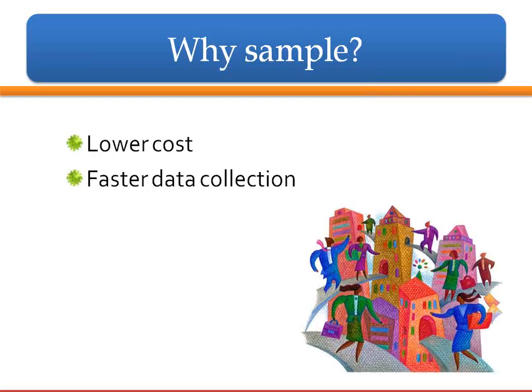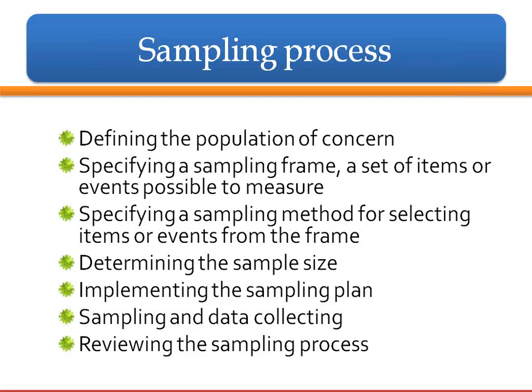Why would you sample as opposed to survey everyone? It doesn't cost as much money because you're going with a smaller number of people, and you can collect data a lot faster because you're not trying to recruit everyone. What's the sampling process? You define the population of concern, specify a sampling frame, specify the sampling method, determine your sample size — in other words, how many people you're going to collect information from — implement the plan, do the sampling, collect your data, and at the end, look at how it went.